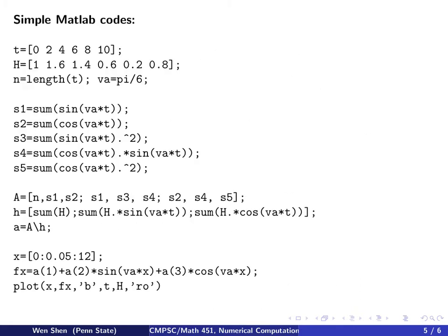So remember what we have to do, and then let's look at the MATLAB code. I generate my t vector and my h vector, those are the data, and then I compute the length of the t vector, so I know how many points. And since this quantity, pi over 6, appears everywhere in the sine cosine function, I just give the value to something I call VA.